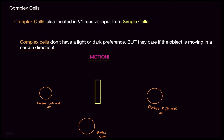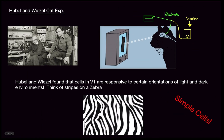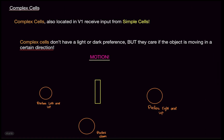These two researchers also recognized complex cells. They did not publish on complex cells because they felt they didn't have enough data or evidence, but they were correct. Complex cells are also located in V1, but they receive inputs from simple cells — after the simple cells are done firing, it's going to synapse to complex cells. Complex cells don't have a light or dark preference; they don't care about the zebra pattern.